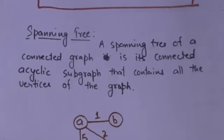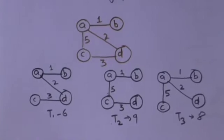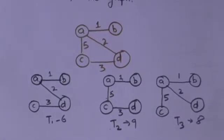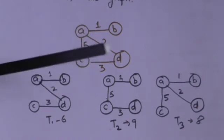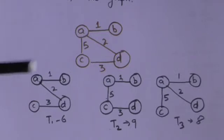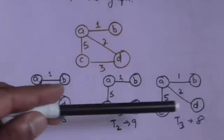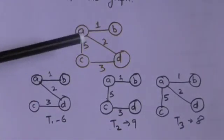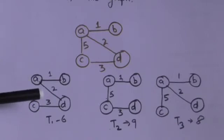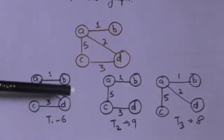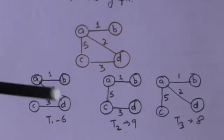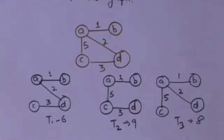A graph can have more than one spanning tree. Consider this weighted graph — T1, T2, and T3 are its spanning trees, because they are subgraphs and contain all the vertices of this graph. These trees T1, T2, and T3 are subgraphs of this graph and contain all the vertices, therefore they are spanning trees of this graph.